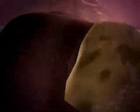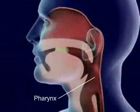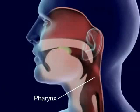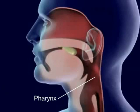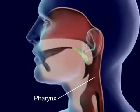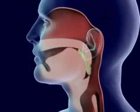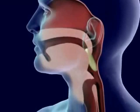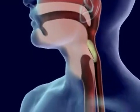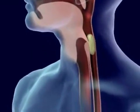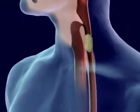Food is forced back into the throat, pharynx, by the tongue. Food in the pharynx stimulates the swallowing reflex. The larynx is pulled upward to meet the epiglottis and seal off the trachea.